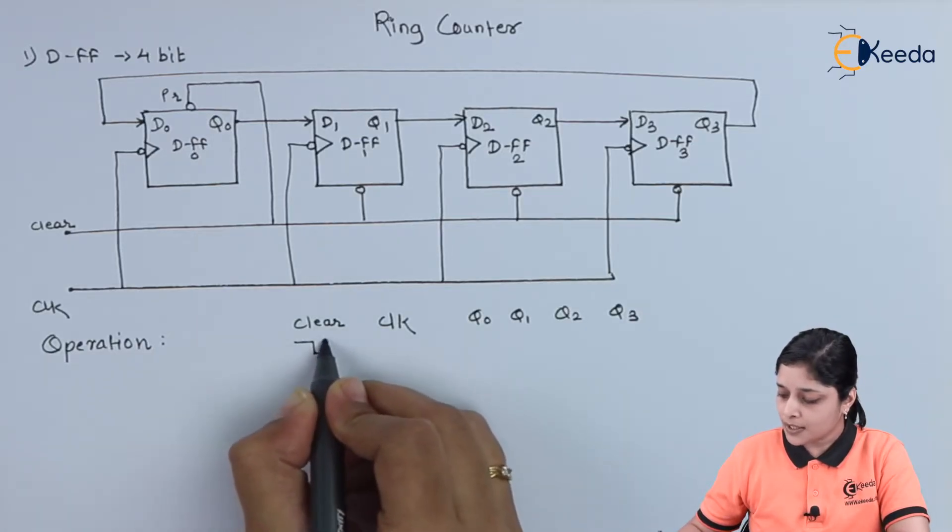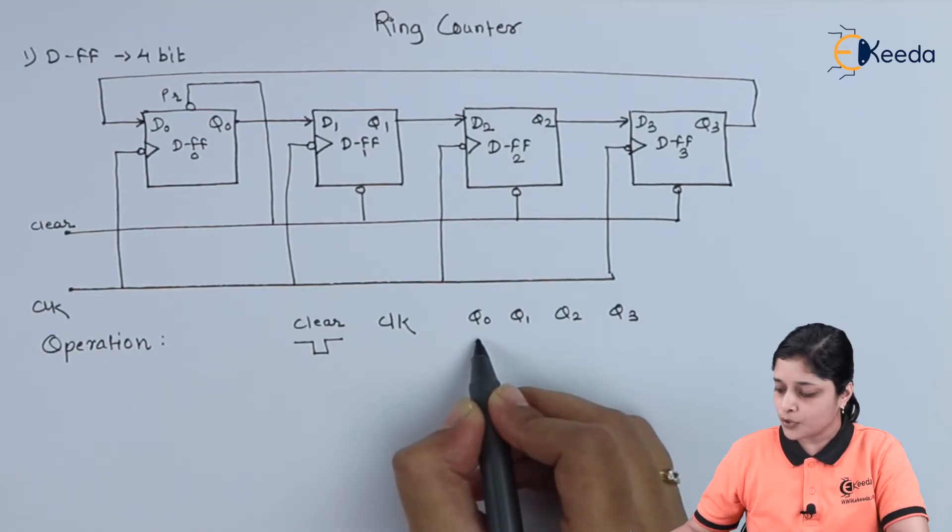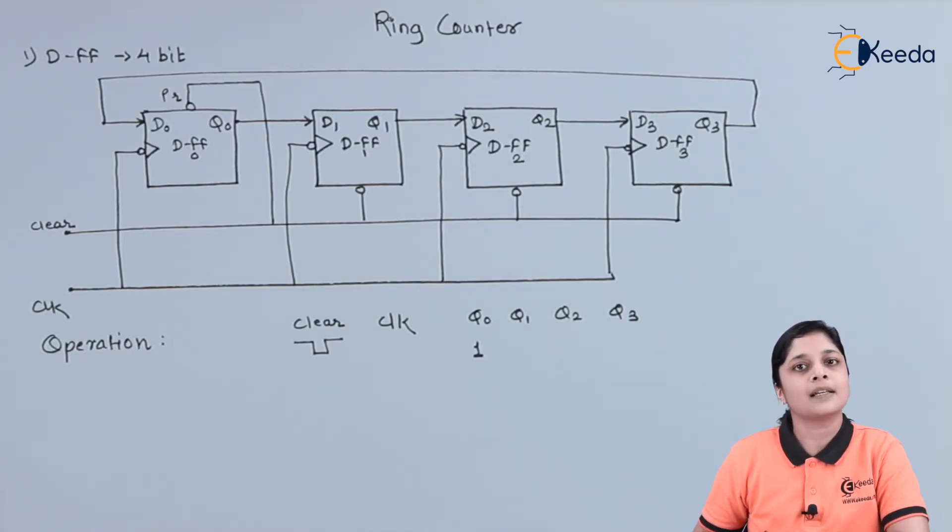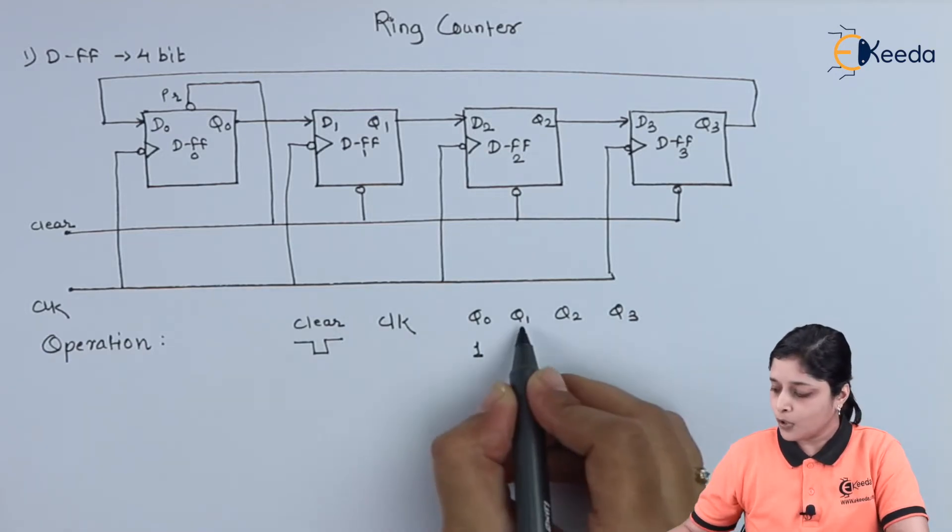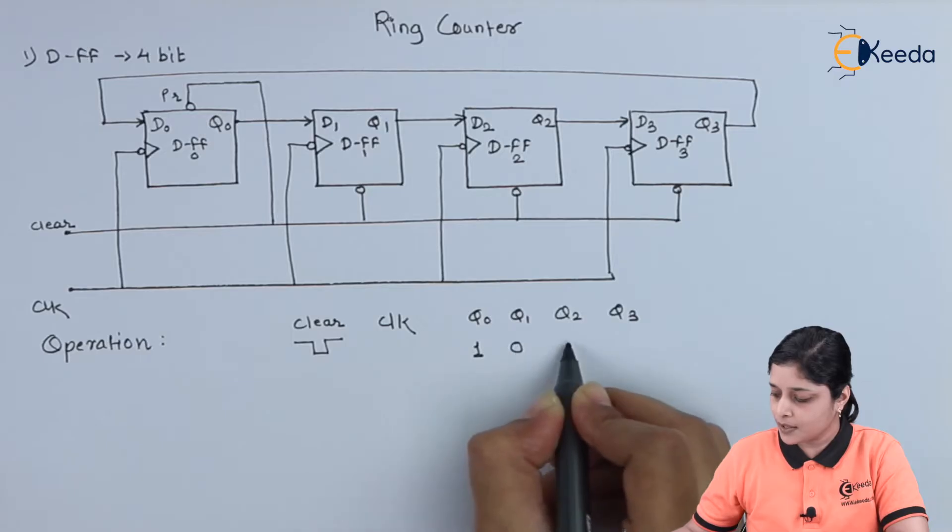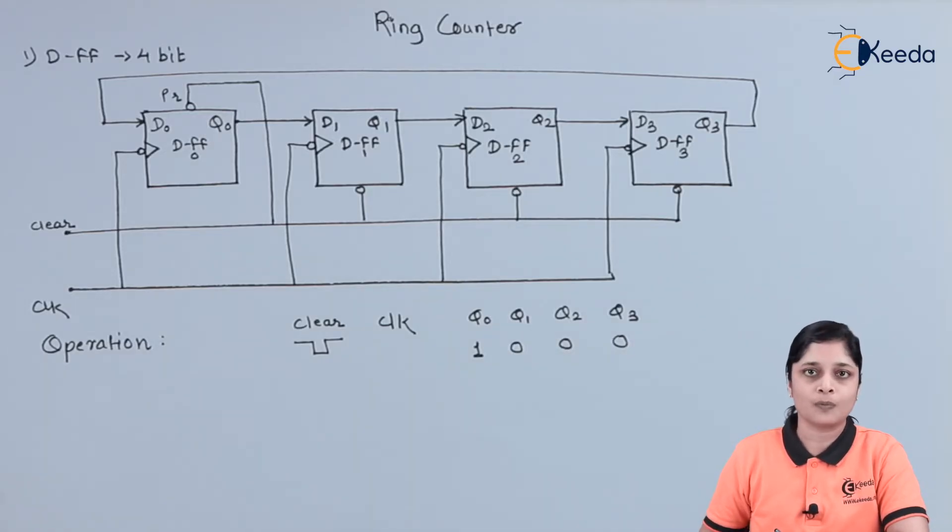First of all, for active low signal, you have to apply. Preset and clear terminals are active. We will get the output for Q0 is 1 because preset is low. For Q1, clear terminal is low. That's why we get 0. For Q2 and Q3, again we get 0. This is your first step.